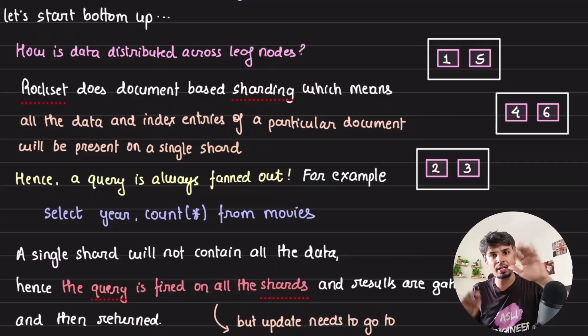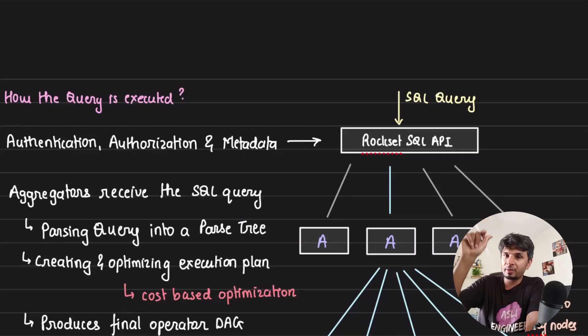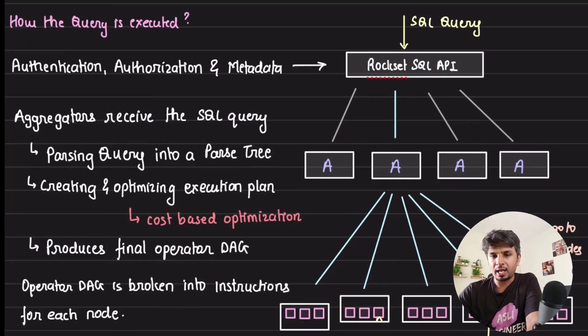Now, how is the query executed? We understood that the data is distributed across multiple nodes and whenever a query comes in it would need to be fanned out across multiple leaf nodes. So what happens? How is the query executed?